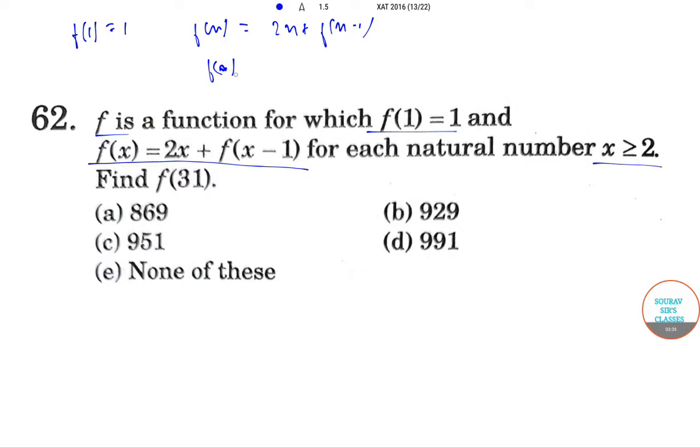Now, using this we can say that fx minus fx minus 1 by 2 equals x. Now putting the values of x from 2 to 31, we get f2 minus f1 by 2 equals 2.